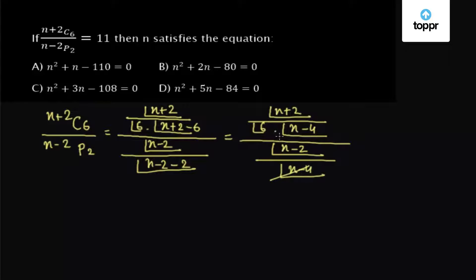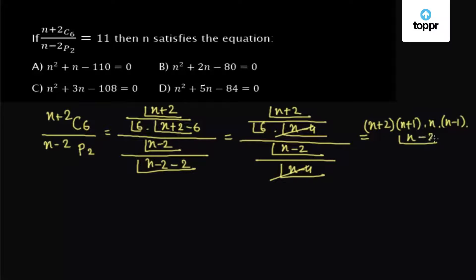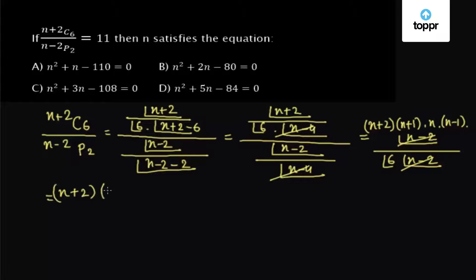Now factorial(n-4) cancels with factorial(n-4), and we expand factorial(n+2) to get (n+2)(n+1)(n)(n-1) times factorial(n-2), divided by factorial(6) times factorial(n-2). Then factorial(n-2) cancels on numerator and denominator, leaving (n+2)(n+1)(n)(n-1) divided by factorial(6), which equals 11 as given.